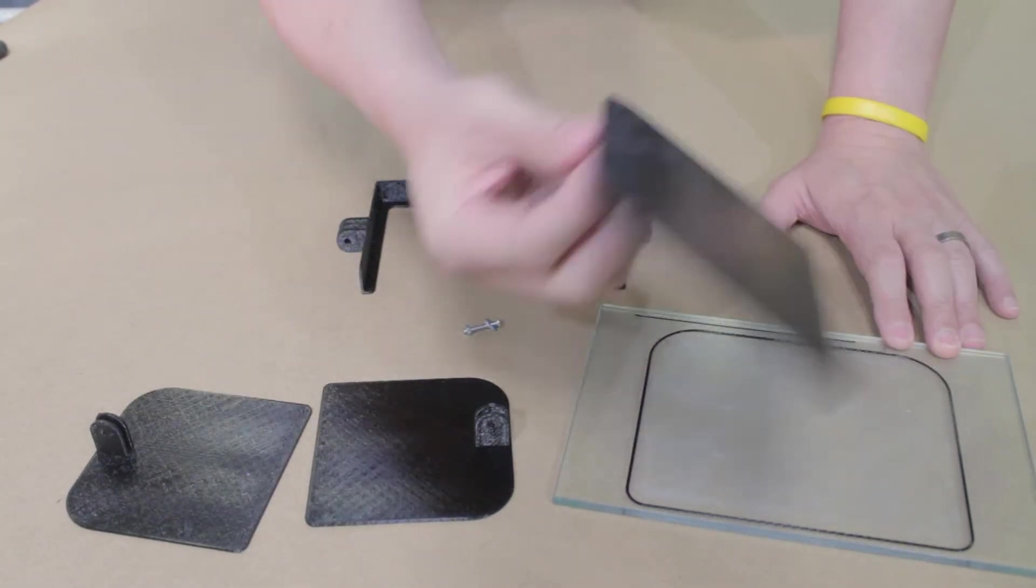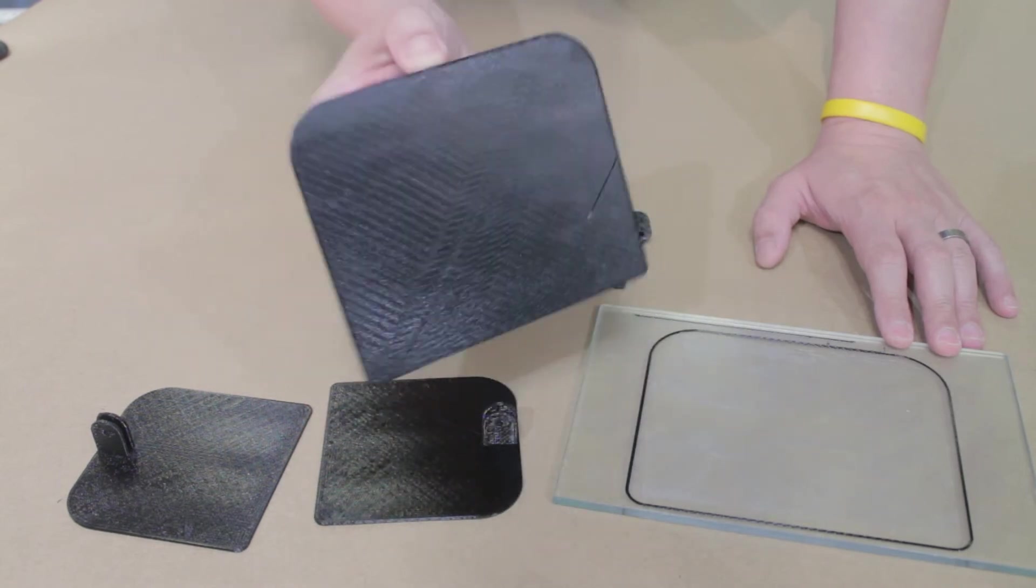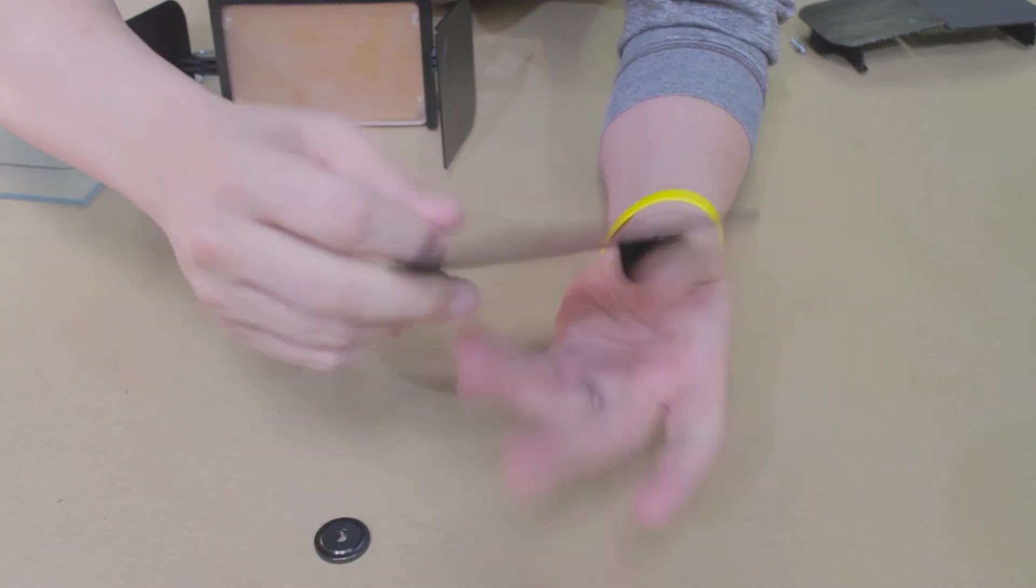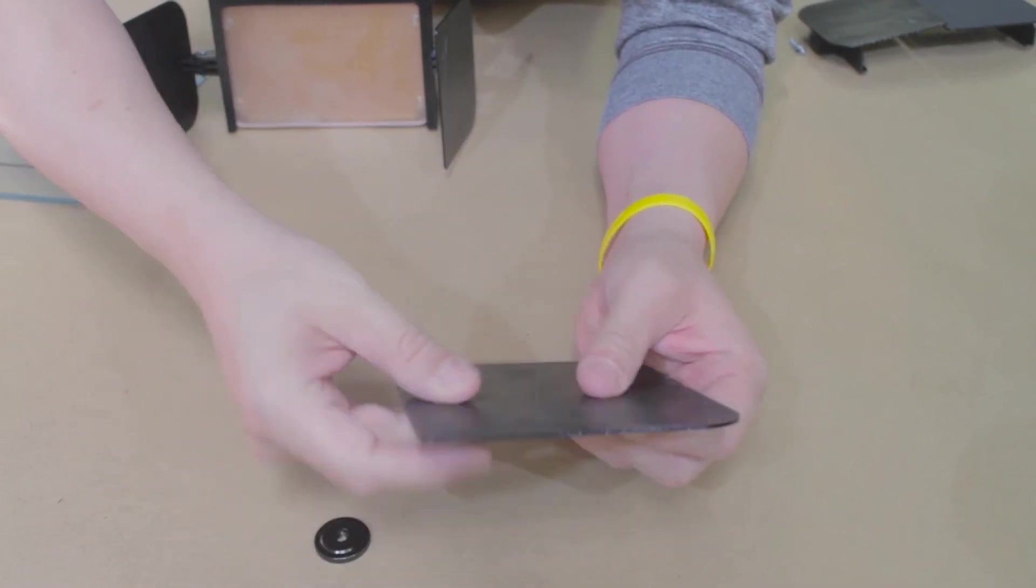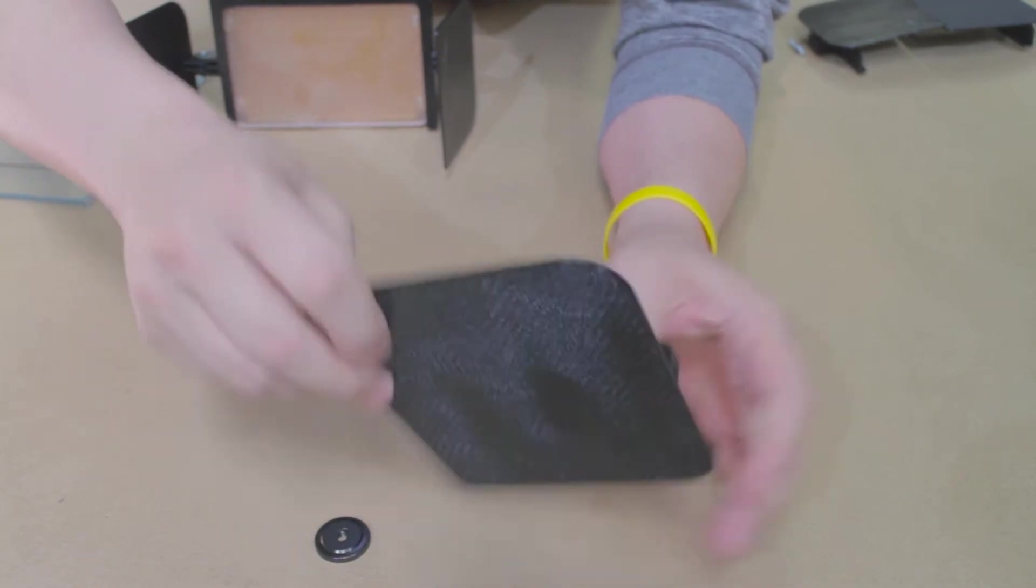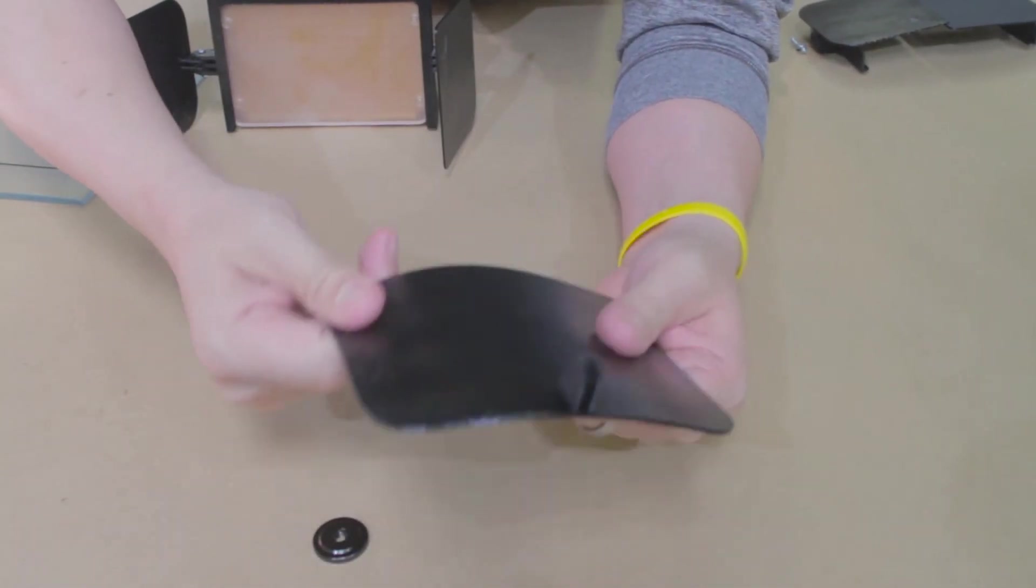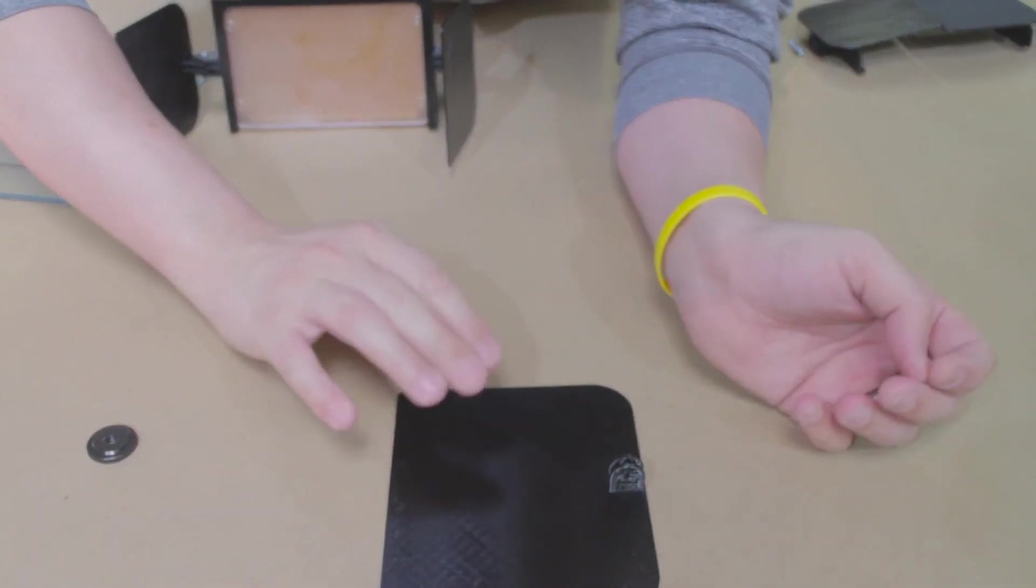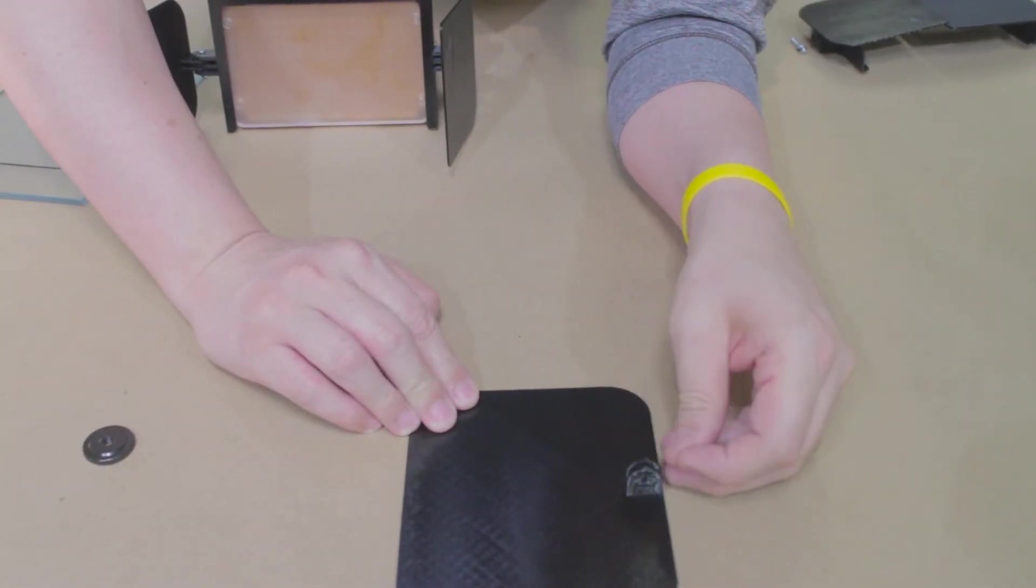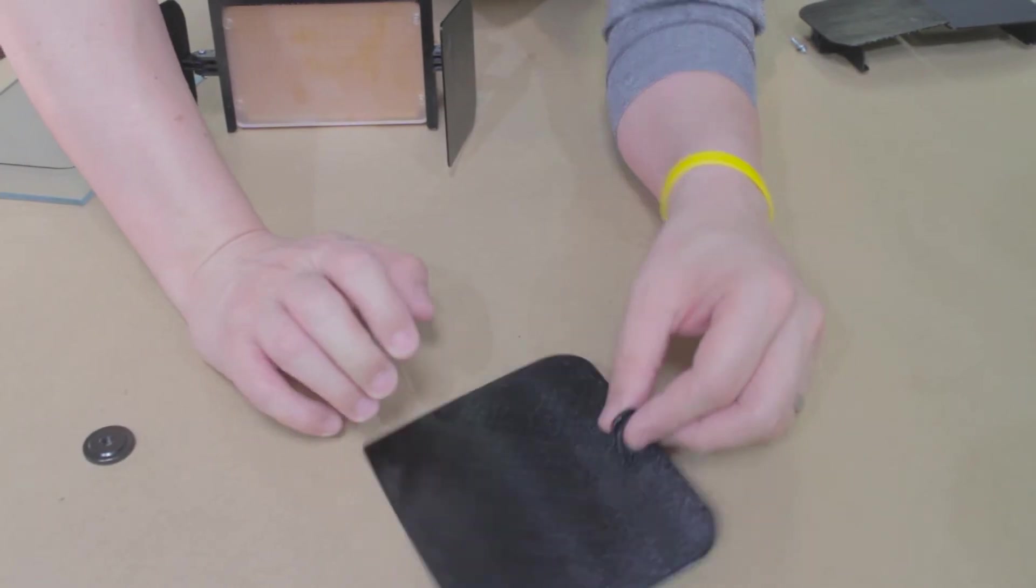This is the top plate and it was designed with, it's fairly thin, you can see it. It was designed with PETG in mind for printing, so I wanted something that was going to hold up and not break, so I used PETG instead of ABS or PLA.